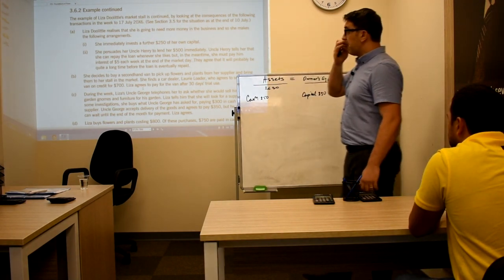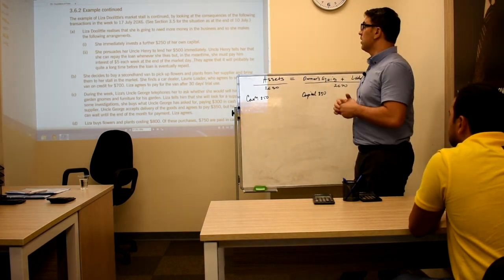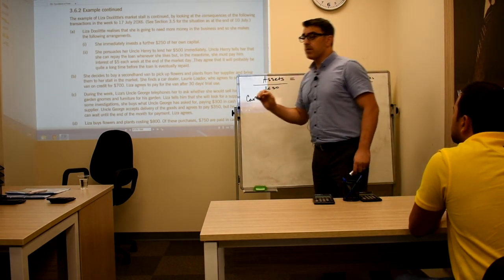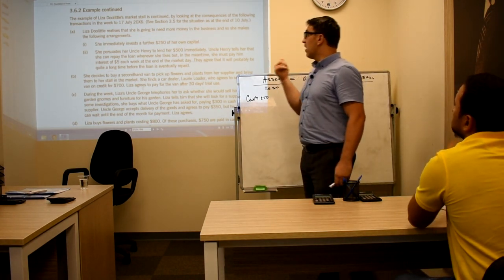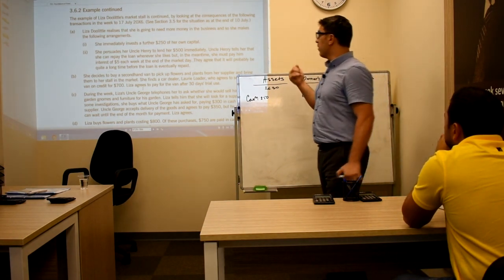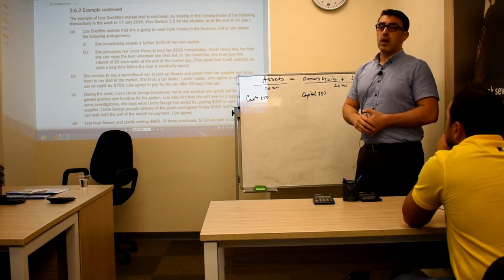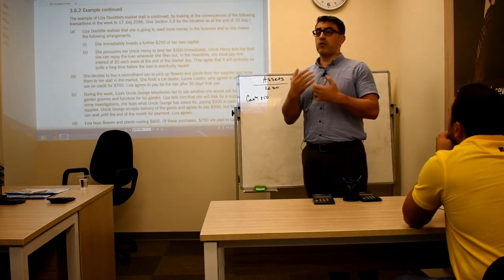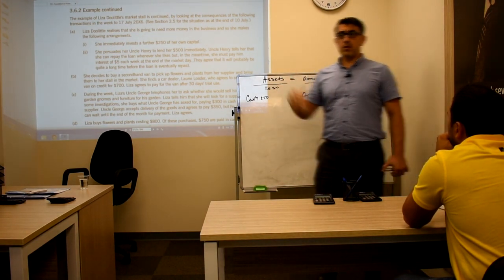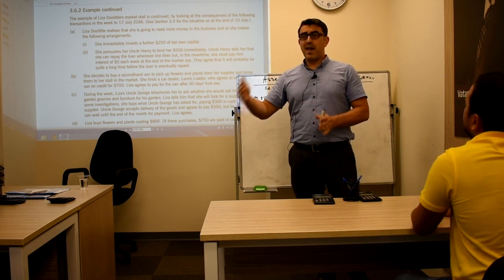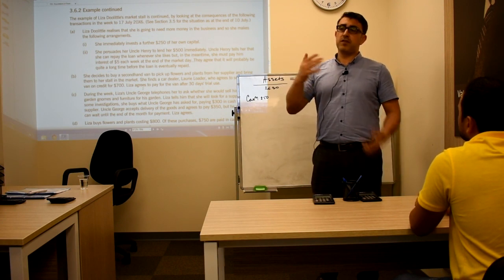Next, related to this additional money: she persuades her uncle Henry to lend her $500 immediately. Uncle Henry tells her that she can repay the loan whenever she likes, but in the meantime she must pay him interest of $5 each week at the end of market day. She asked Uncle Henry to borrow $500 and Uncle Henry said it's okay, but at the end of each week you will pay me $5. This is a kind of interest on this debt.